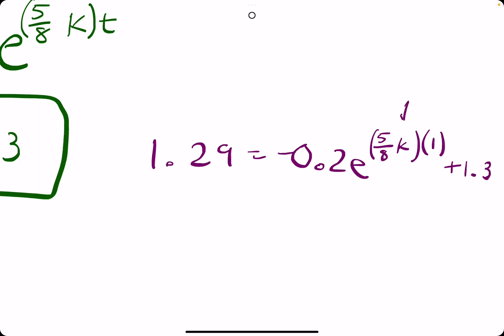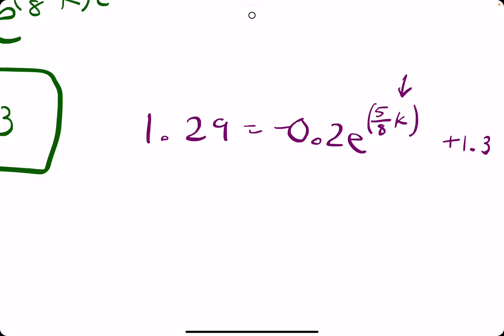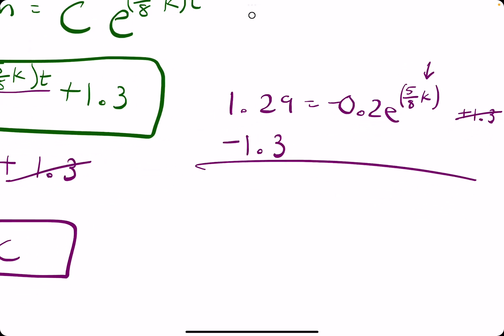Alright, so our goal is to solve for k. Going ahead with this exponent times 1, we'll just leave 5 eighths k, and we want to start by subtracting 1.3. That'll get rid of the 1 on the right side. 1.29 minus 1.30 would give us just a nice negative 0.01. Equals negative 0.2e to the 5 eighths k.